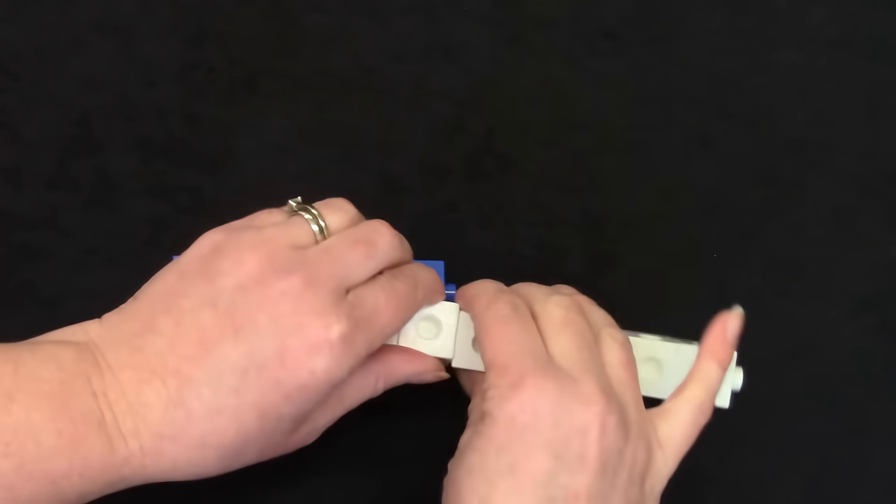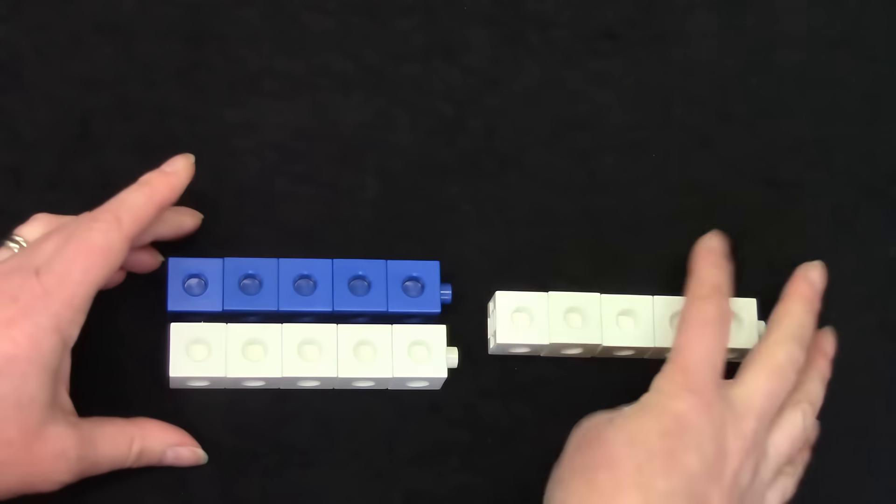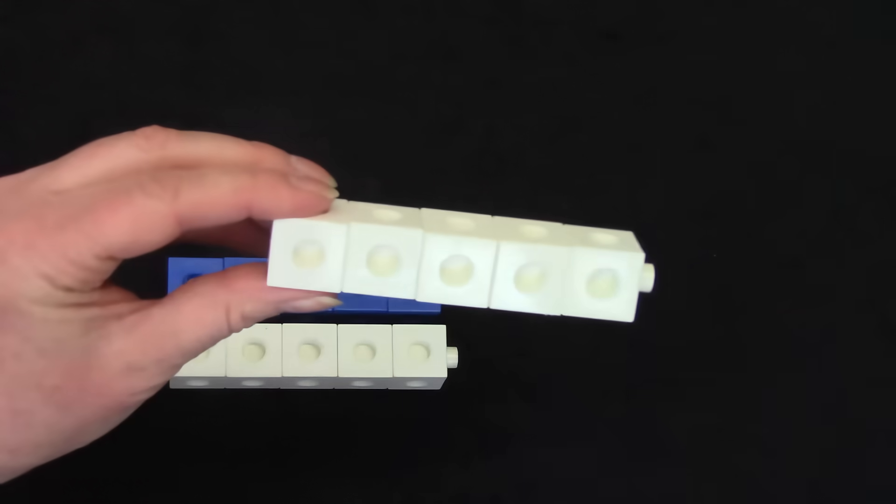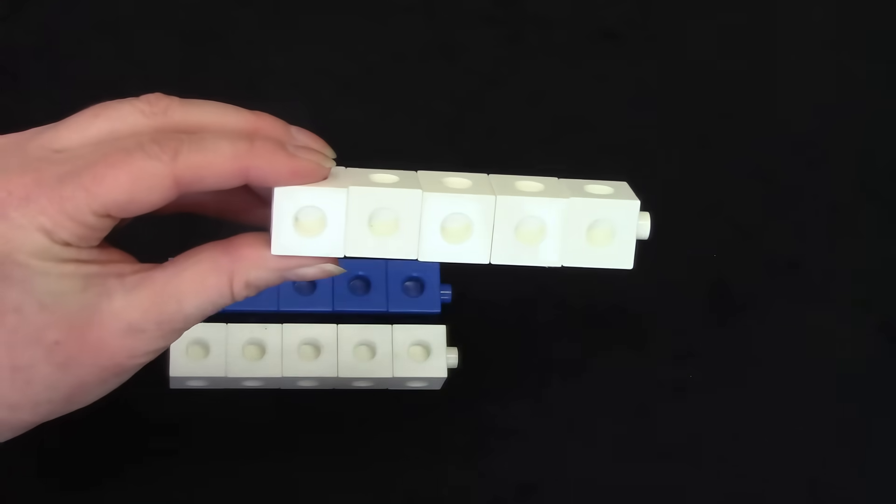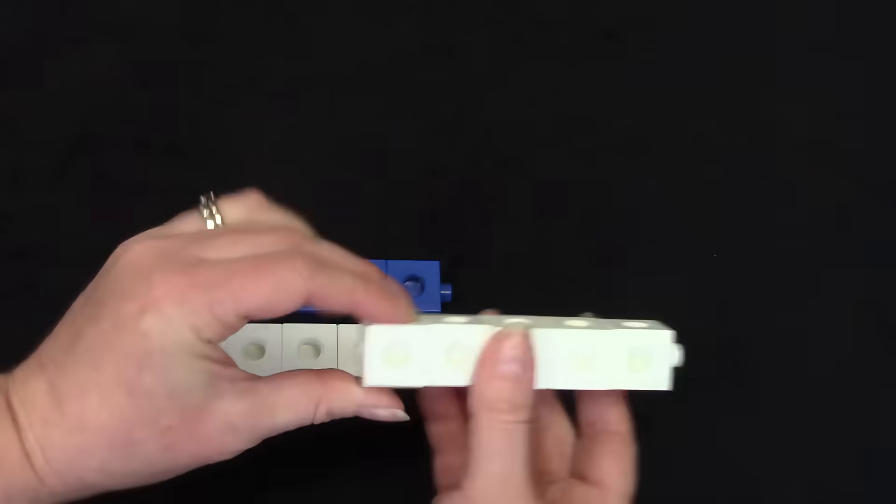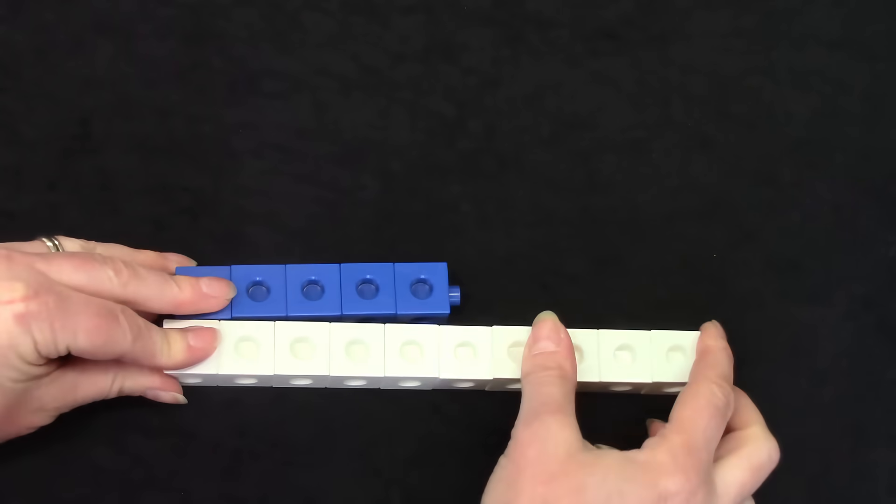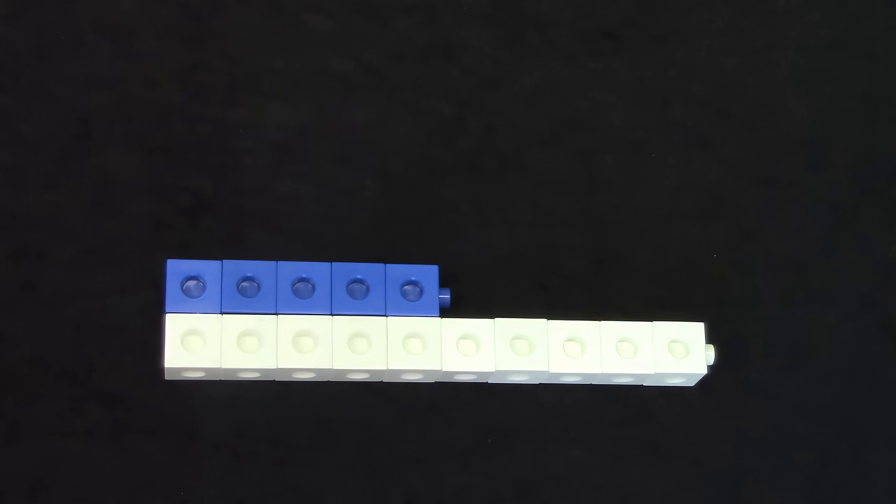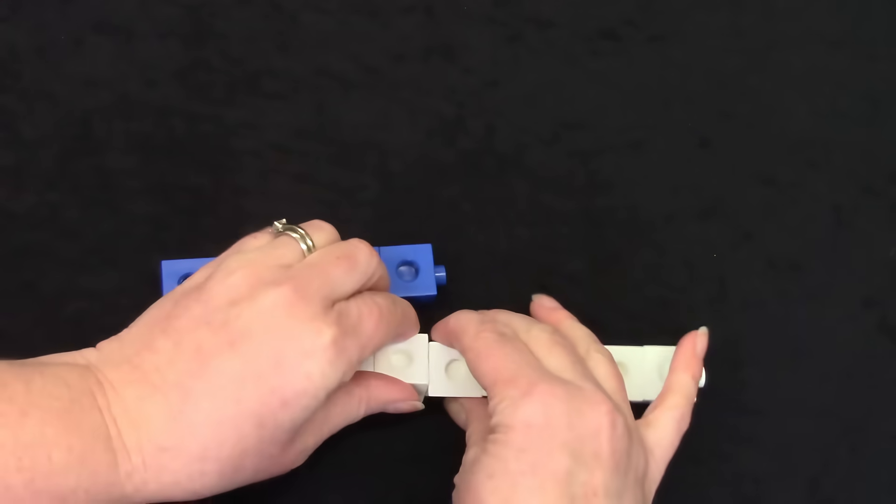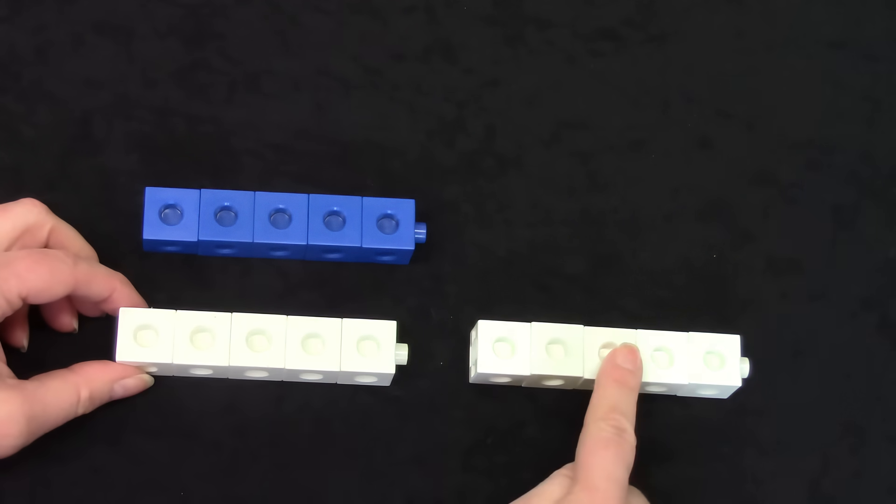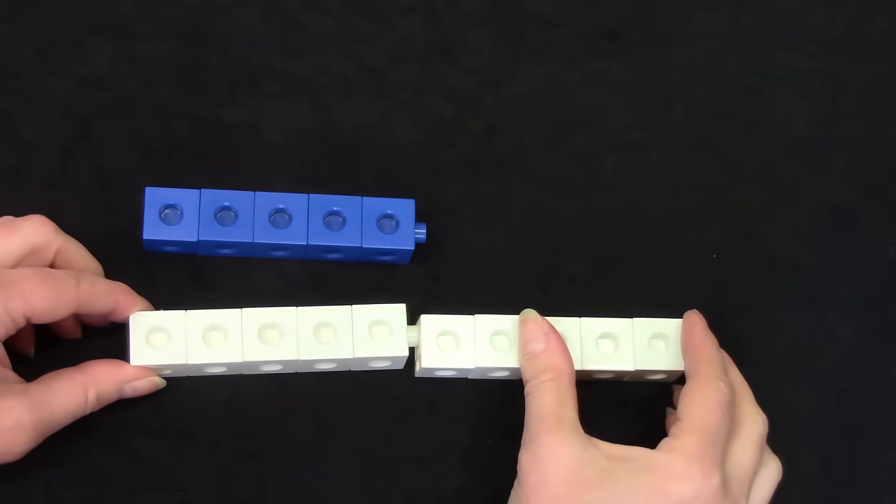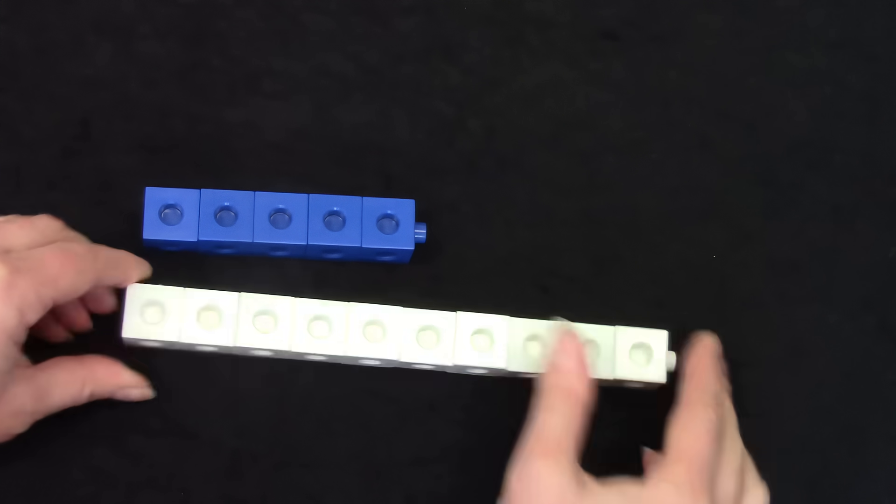How many more blocks does the white tower have? Well, we can just cut it right in half and take a closer look. 1 2 3 4 5. 10 is 5 more than the number 5. We knew that though because that is one of our doubles facts. 5 plus 5 equals 10.